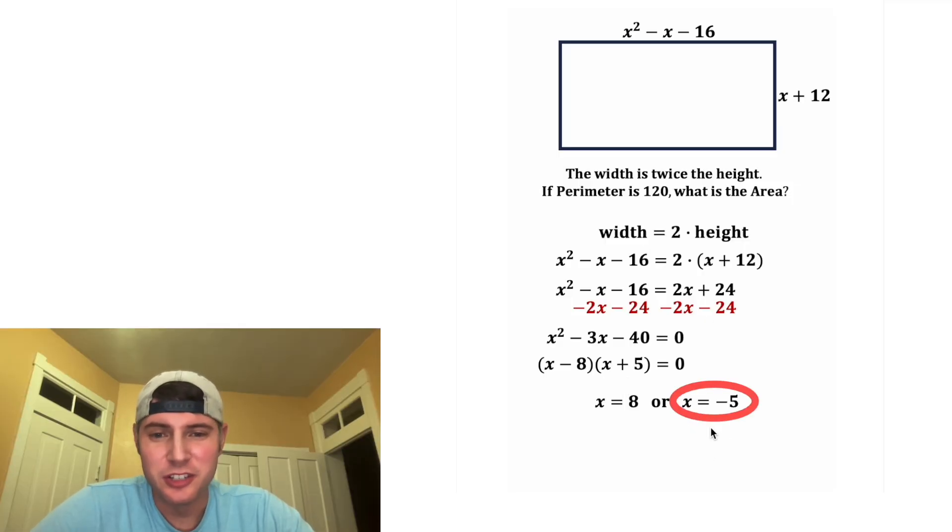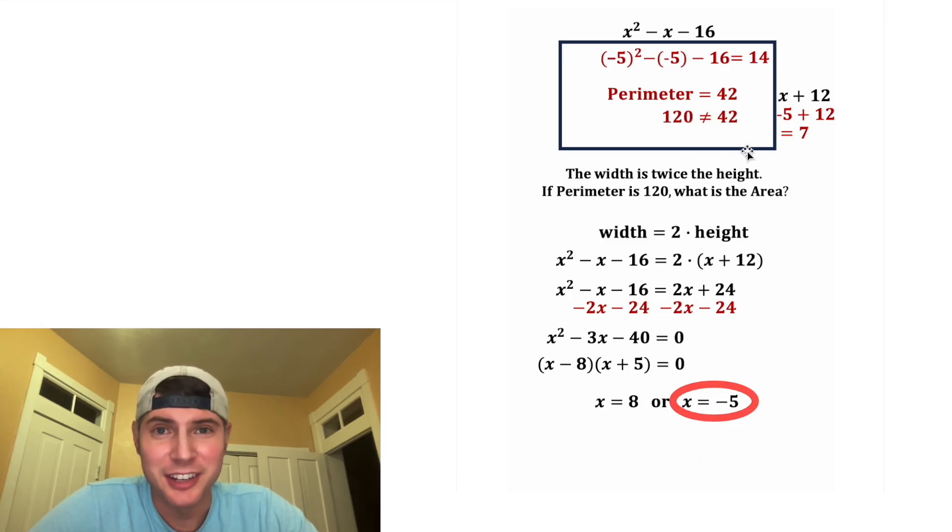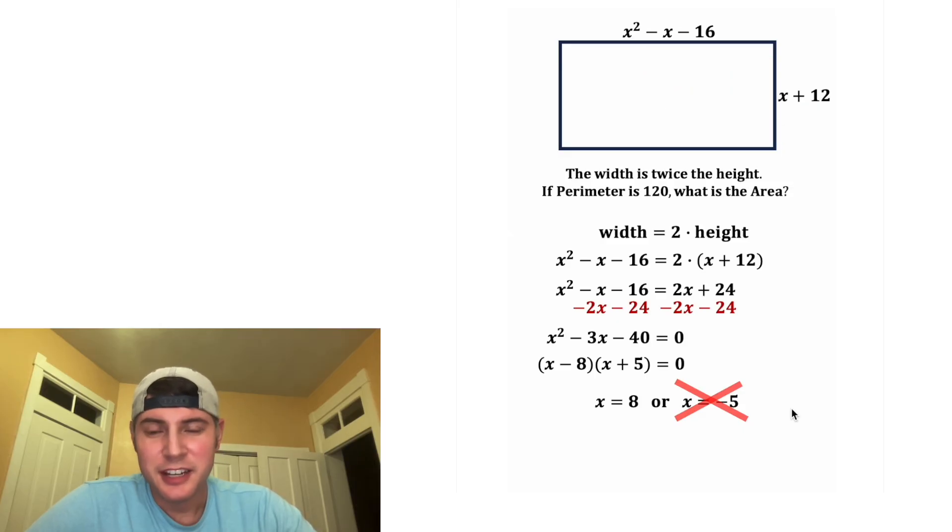Now let's test our solution. Let's take x = -5 and plug it in. Negative 5 plus 12 gives us 7, and this will be 25 + 5 which is 30, minus 16 is 14. The perimeter would be 14 + 7 + 14 + 7, which is only 42. We need the perimeter to be 120, so x = -5 is an extraneous solution.